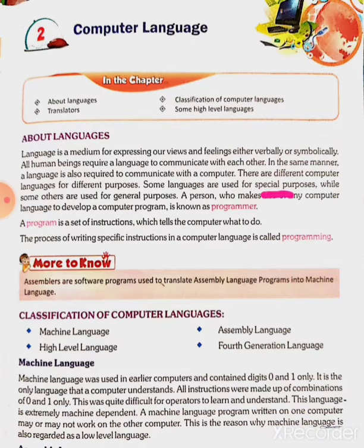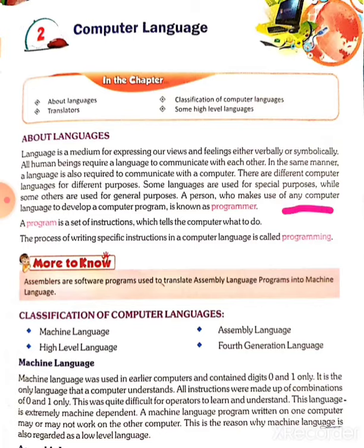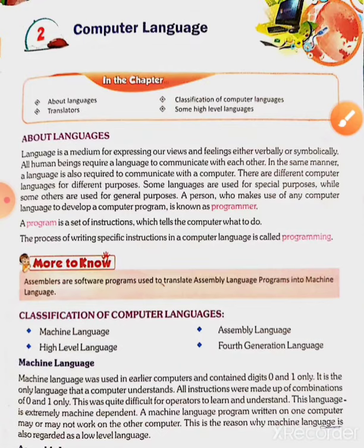Some languages are used for specific purposes and some are used for general purposes. A person who makes use of any computer language to develop a computer program is called a programmer. And what is a program? A program is a set of instructions which tells the computer what to do. The one who writes a program is called a programmer.